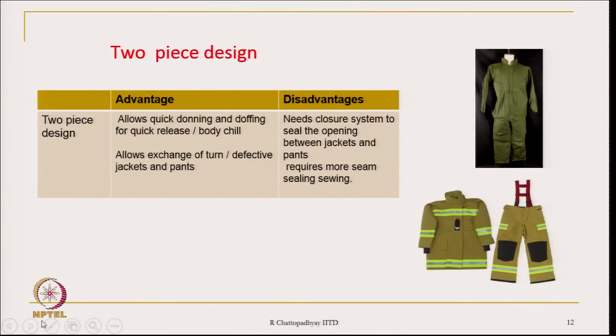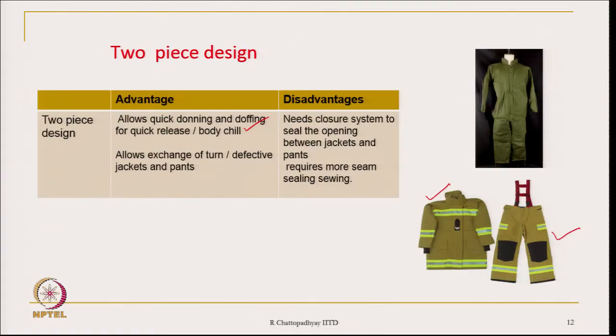Two-piece design is another alternative, where there is a trouser and a jacket. Two-piece design allows quick donning and doffing for quick release of heat or body chill, and allows exchange of defective jackets and pants. If the jacket is defective, you can remove it and take another new jacket while the pant may still be working — they are independent of each other. The disadvantage is it needs a closure system to seal the opening between jacket and pants and requires more seam sealing and sewing.